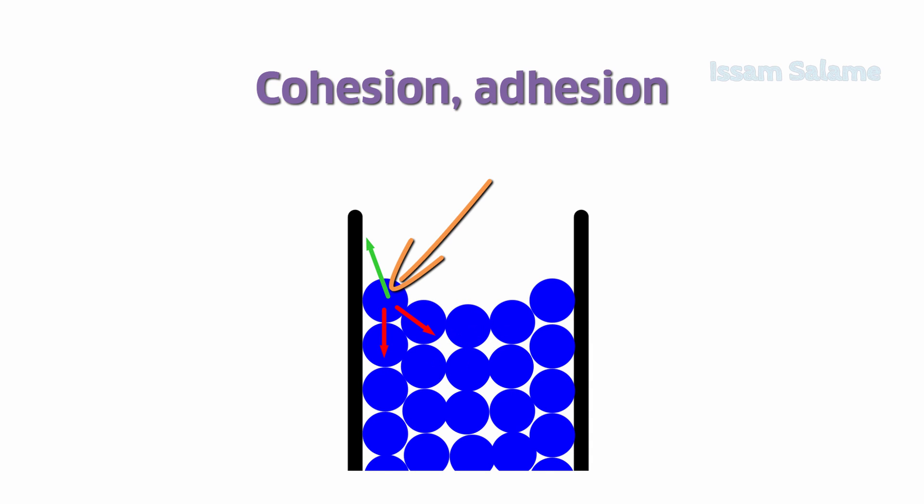The forces acting on a particle in contact with the wall of the container are two types: adhesion forces, which is the attraction between the particle and the walls of the container, and cohesion forces, which attract the particle to the other particles of the liquid.